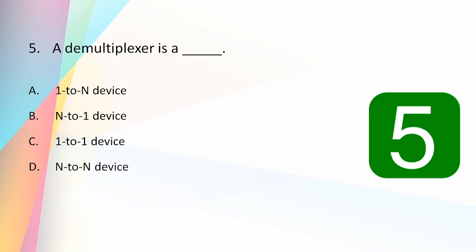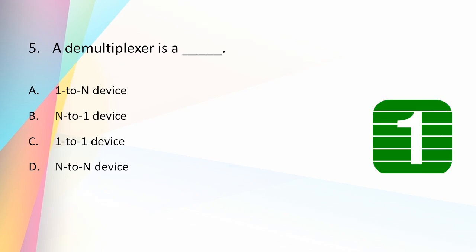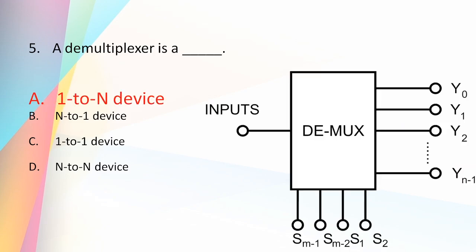A demultiplexer is a: 1 to n device, n to 1 device, 1 to 1 device, or n to n device? The answer is 1 to n device. A demultiplexer performs an operation just reverse to that of a multiplexer. A demultiplexer is a combinational circuit which has only one input and many output lines — it routes the one input through different channels depending on the select input.